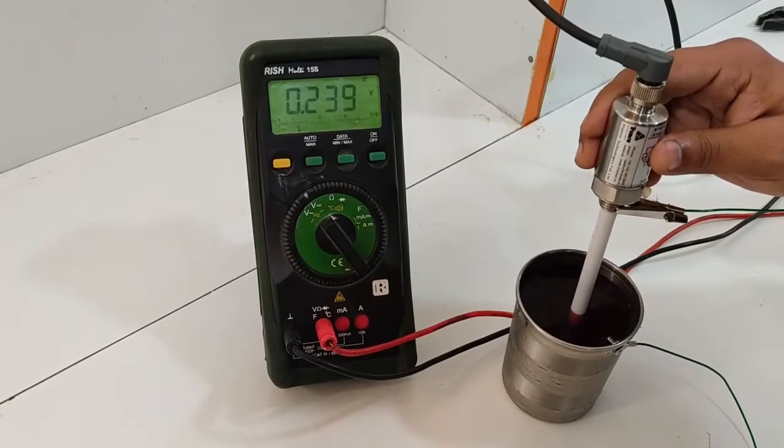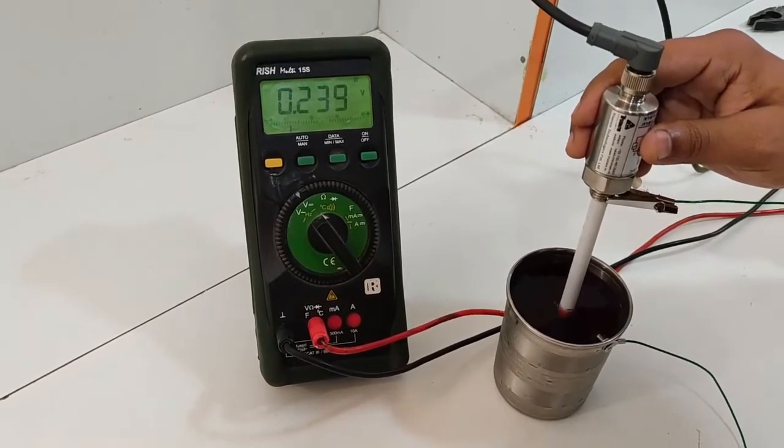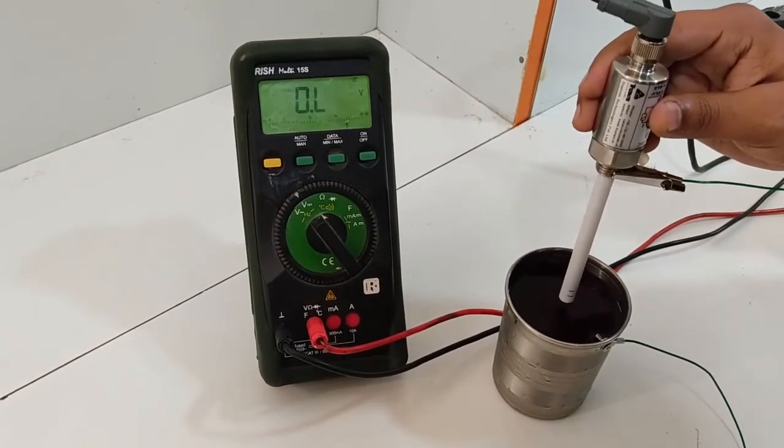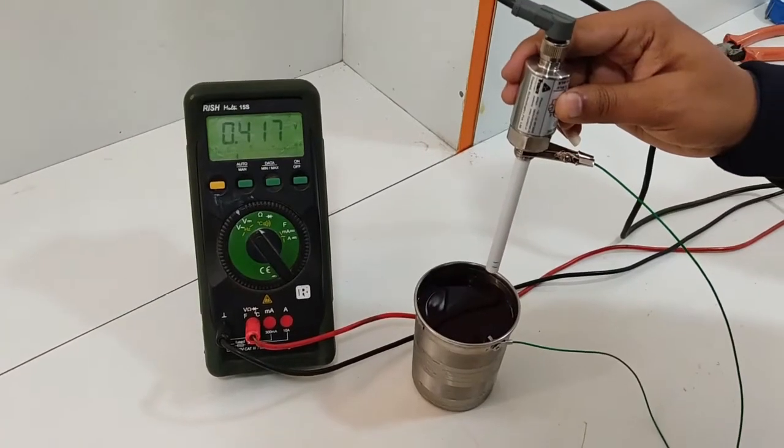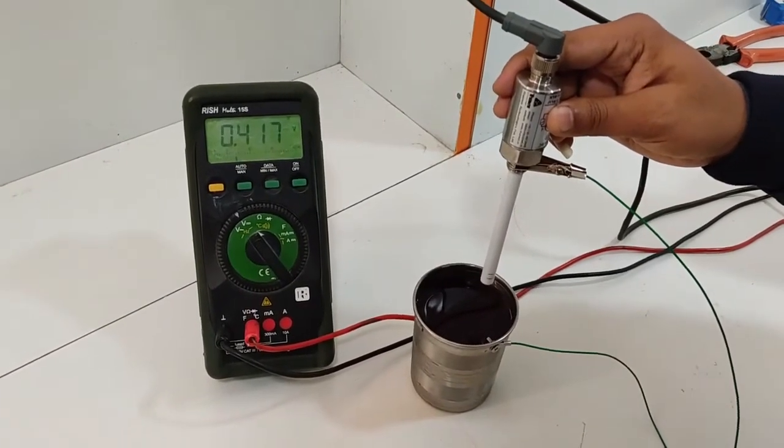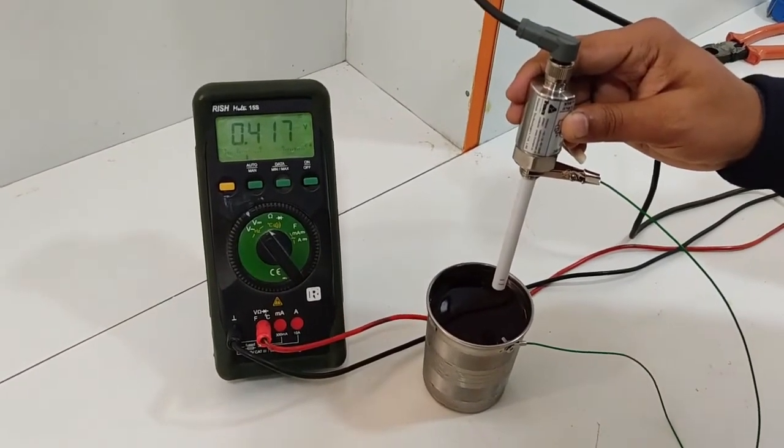The output has changed in the multimeter. Now we change the connection of the failsafe. Now we get the output from 0 to 24.